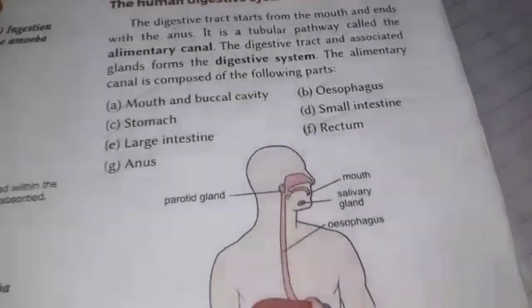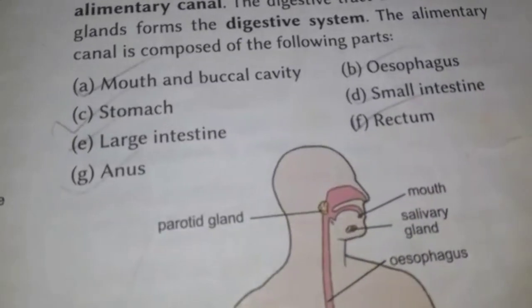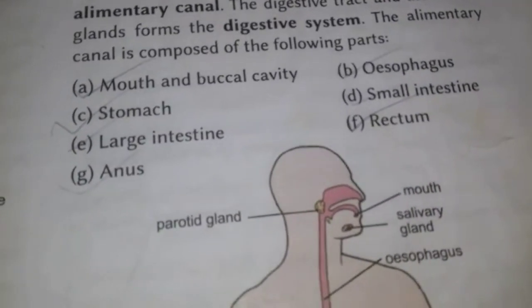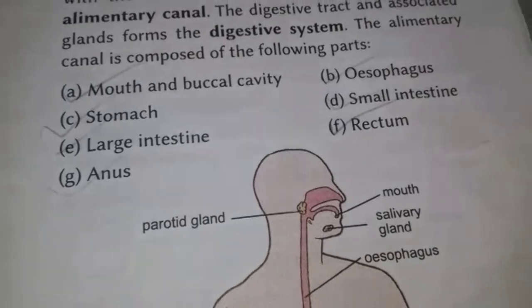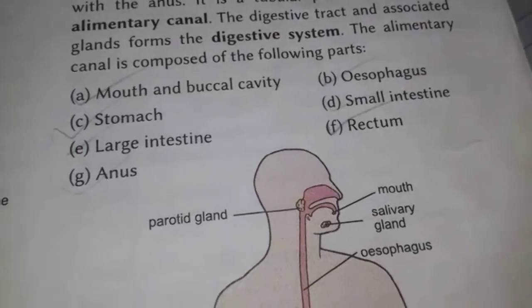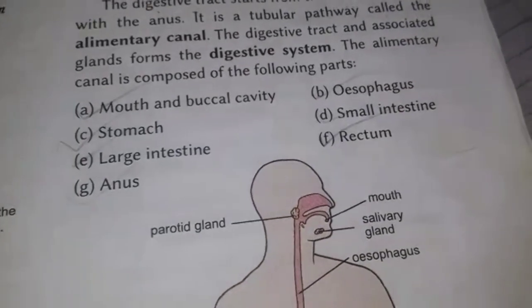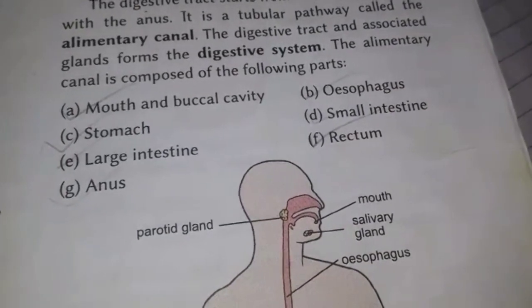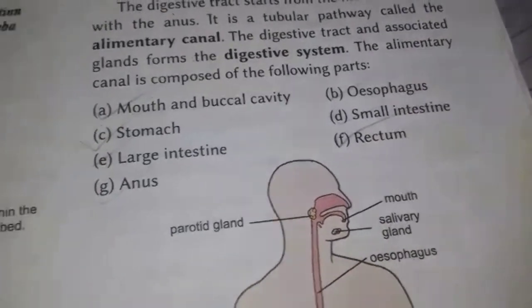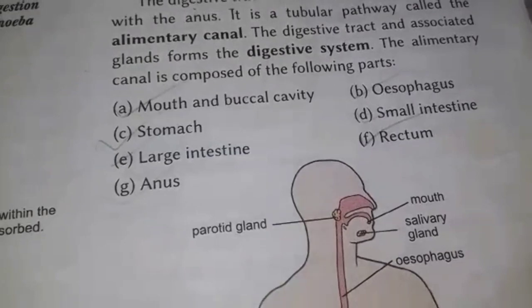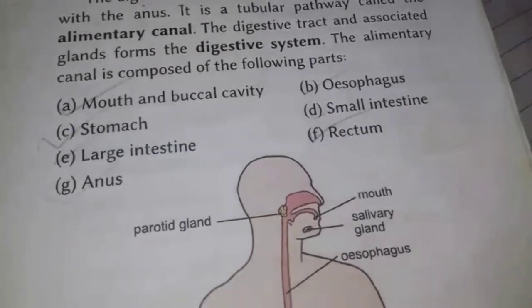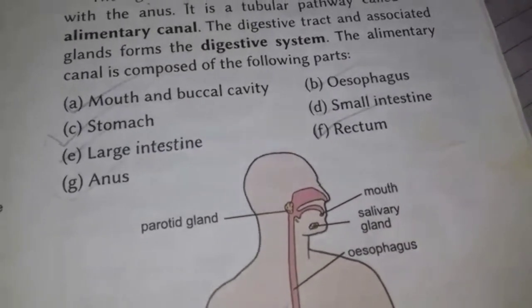There are some important parts of it. A: Mouth and Buccal Cavity, B: Esophagus, C: Stomach, D: Intestine, E: Large Intestine, F: Rectum, G: Anus.